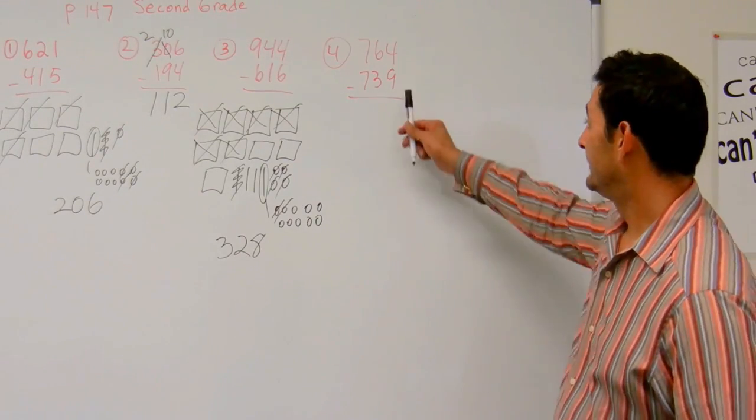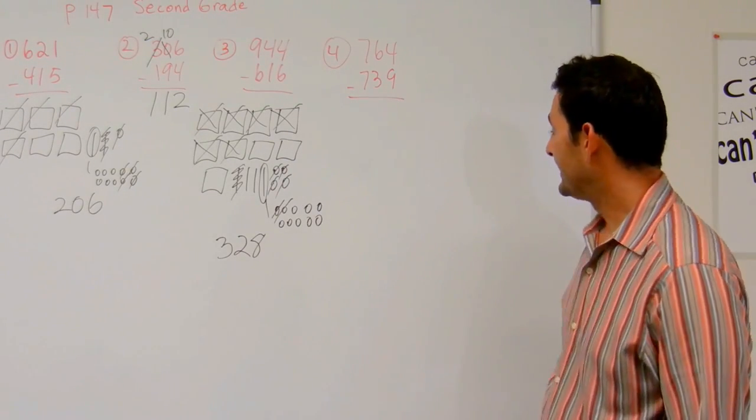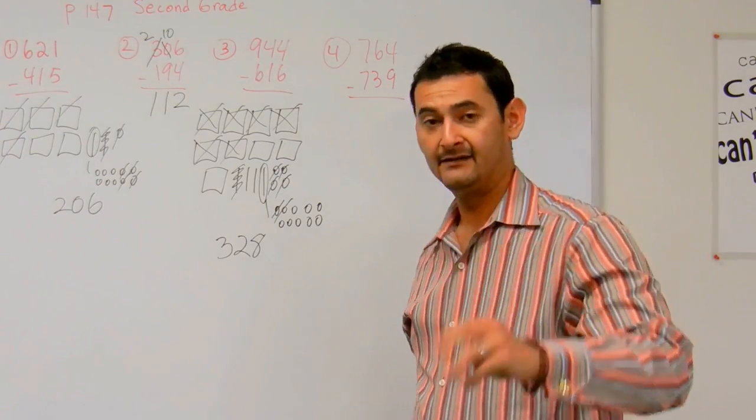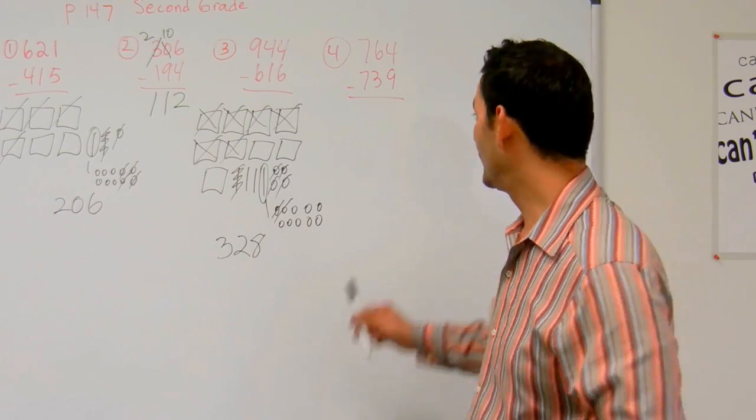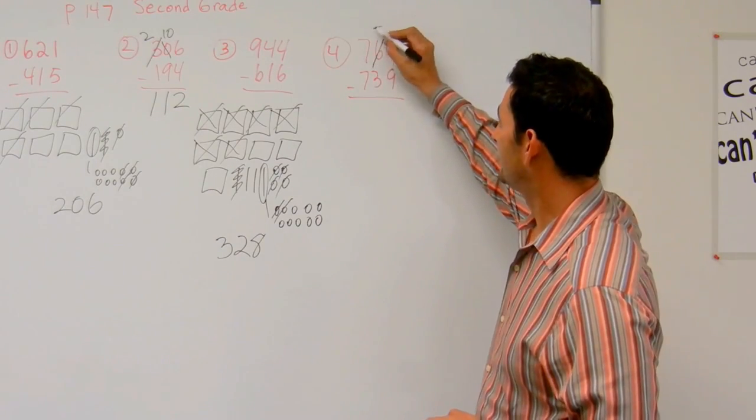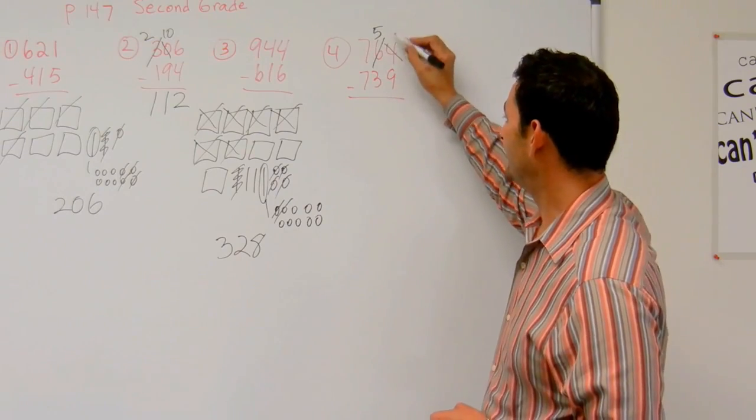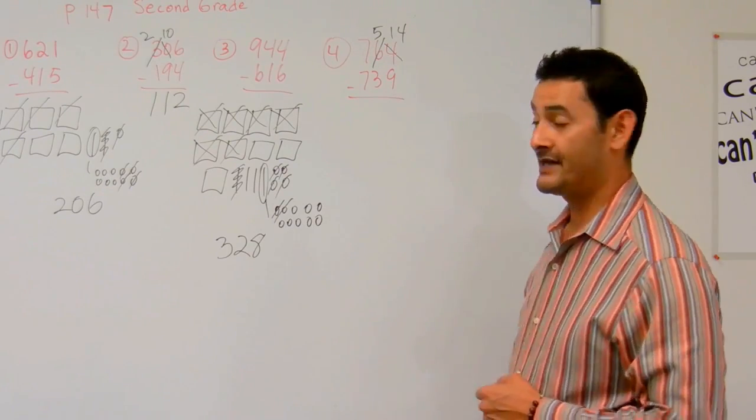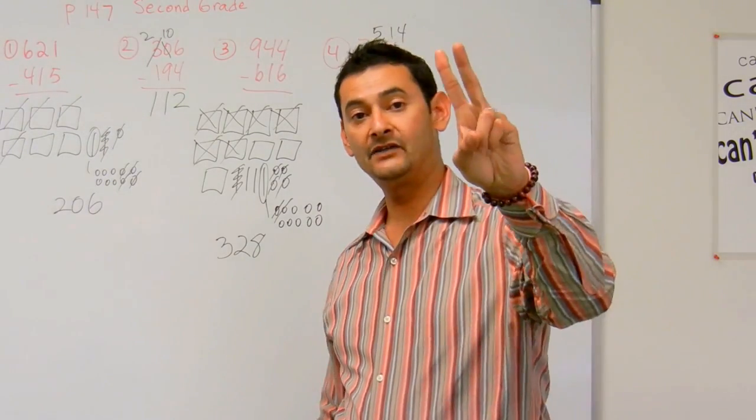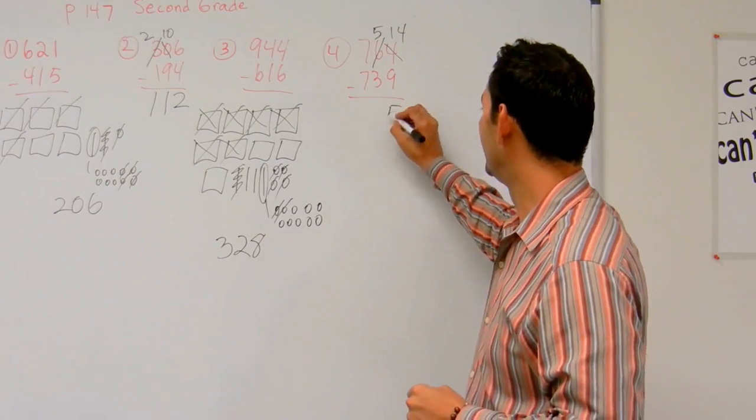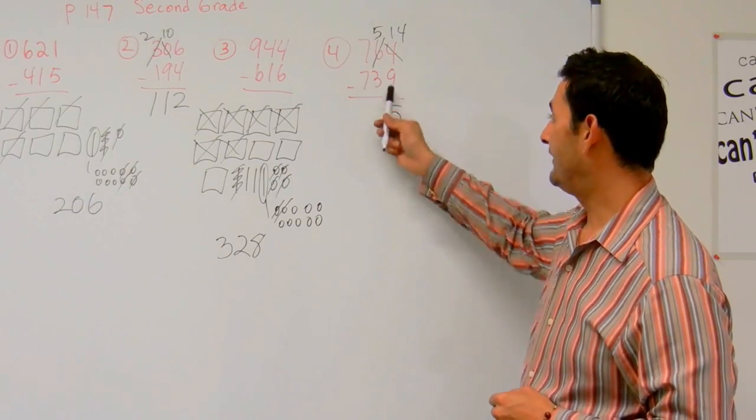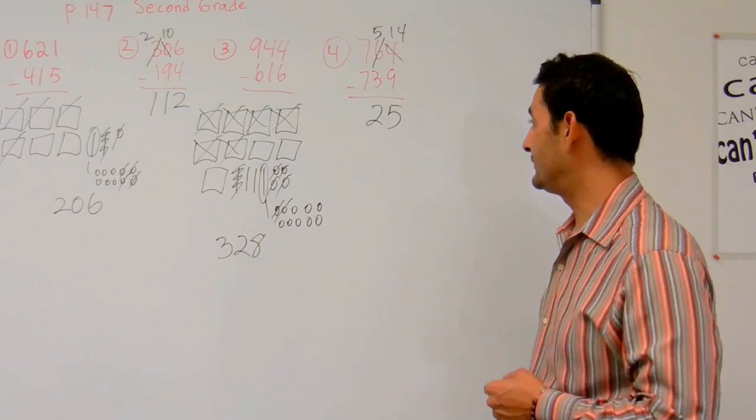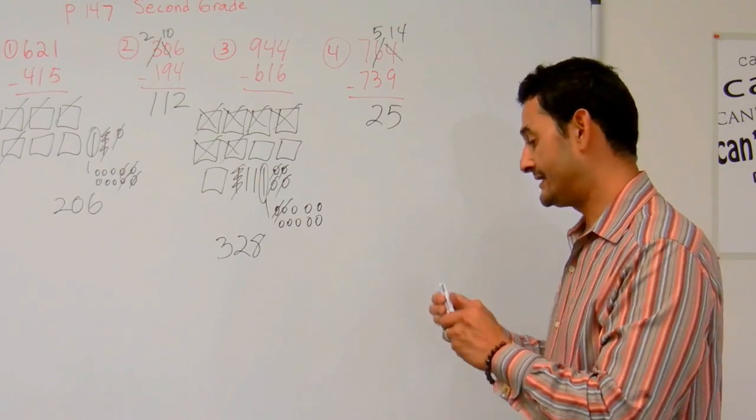Now let's take a look at number 4. Let's go ahead and subtract like we did with number 2. If I have 4, can I take away 9? Absolutely not. What do I need to do? I need to borrow from the 10's place. That's going to become a 5, this will become a 14. So now I've got 14 take away 9. What's that? Just count up: 9, 10, 11, 12, 13, 14. That's going to be 5. Now we're in the 10's place. 5 take away 3, that's 2. And 7 take away 7 is 0. So the answer is going to be 25.